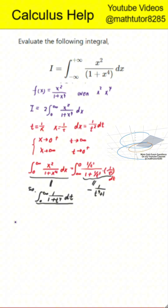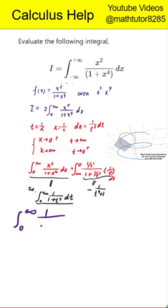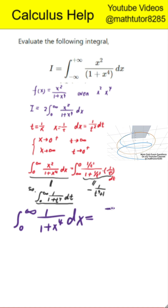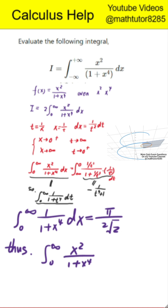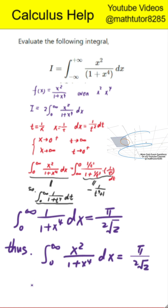Next step, known standard integral. It is a known standard result that the integral from 0 to infinity of 1 divided by 1 plus x to the fourth power dx equals pi divided by 2 times the square root of 2. Therefore, the integral from 0 to infinity of x squared divided by 1 plus x to the fourth power dx equals pi divided by 2 times the square root of 2.